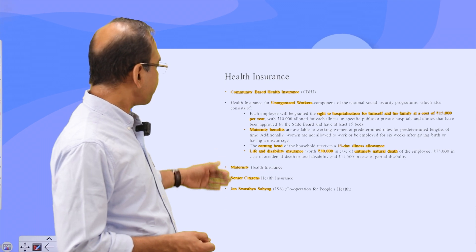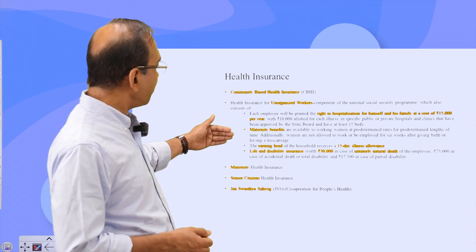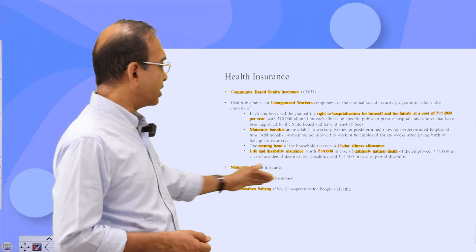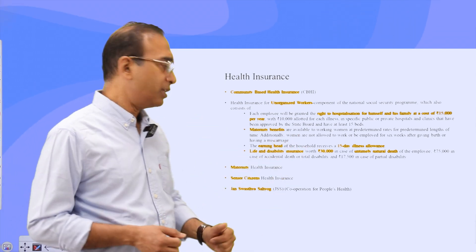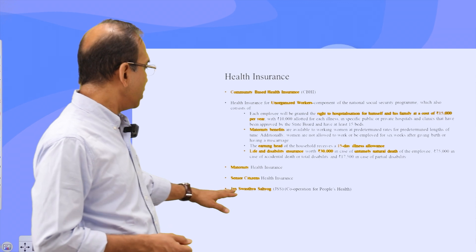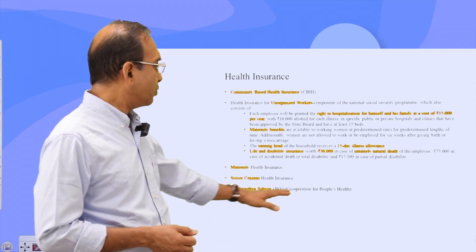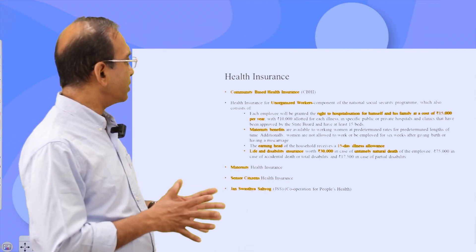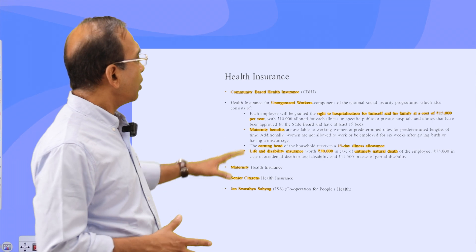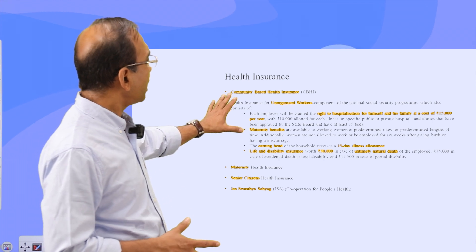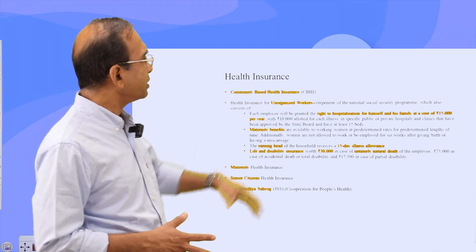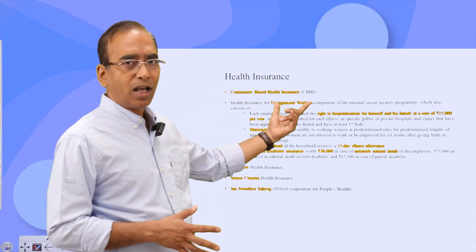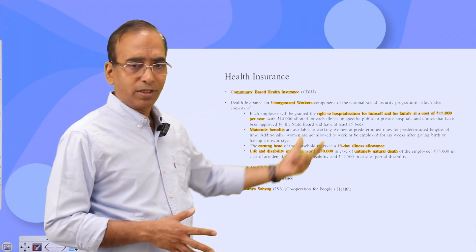We had the maternity health insurance system, senior citizen health insurance system, and Jan Arogya Yojana, which is a cooperative of people's health. For example, community-based health insurance is an example for the unorganized workers.